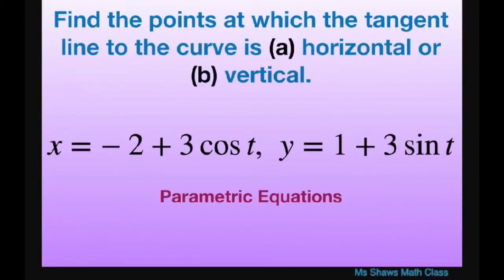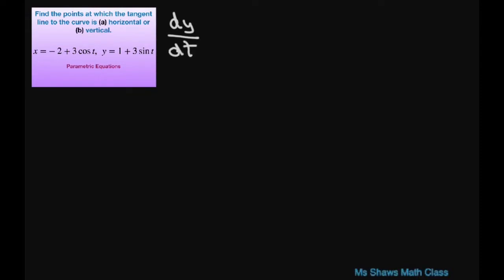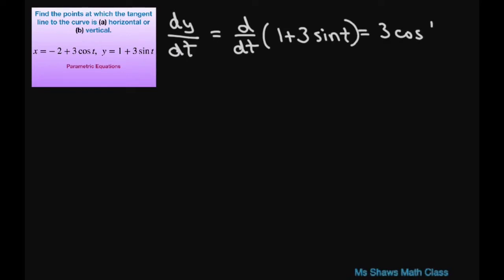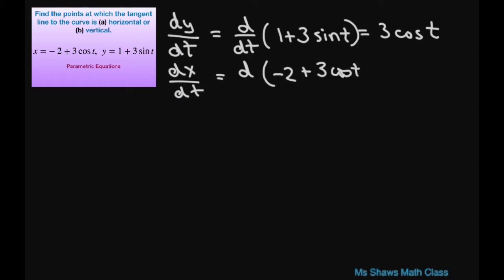Hi everyone, we're going to find the points at which the tangent line to the curve is horizontal or vertical. Here are our two parametric equations. The derivative of y with respect to t equals the derivative of 1 plus 3 sine of t, which equals 3 cosine of t. And the derivative of x with respect to t equals the derivative of negative 2 plus 3 cosine of t, which equals negative 3 sine of t.